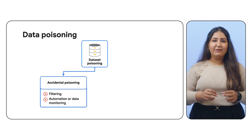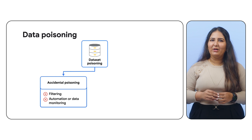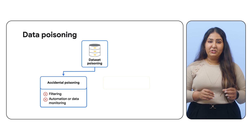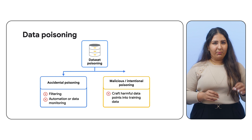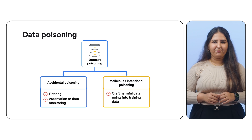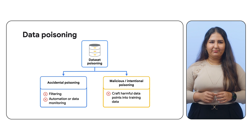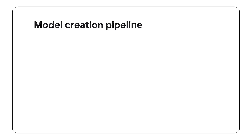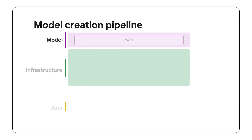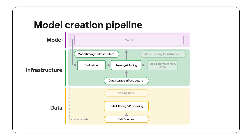Similarly, insufficient automation and data monitoring can cause the model to utilize outdated data. Intentional or malicious data poisoning is done by carefully crafting data points into your training dataset. This forces the model to learn incorrect or harmful patterns. Data poisoning can occur at any stage of the model creation pipeline, such as filtering, storage, training, etc., thus making it a critical concern for whole data handling systems.